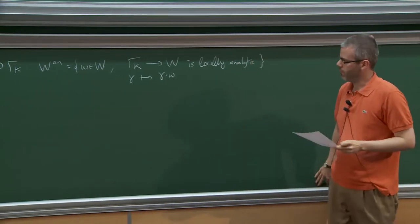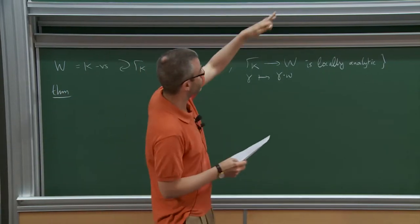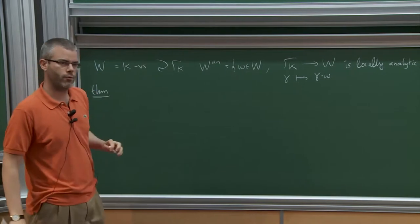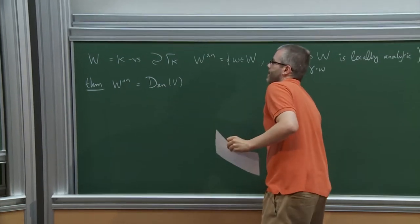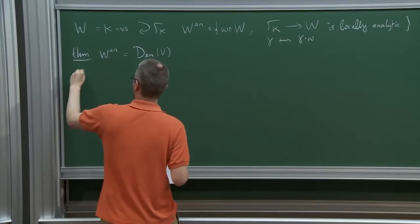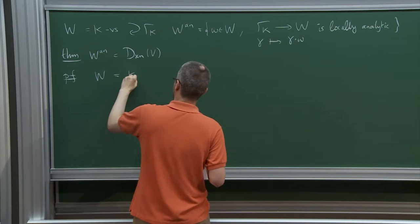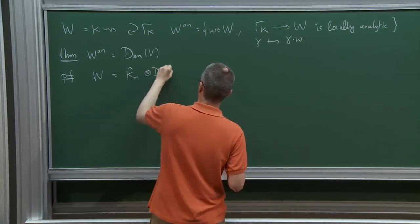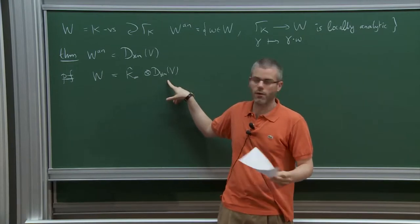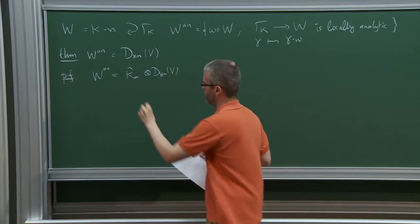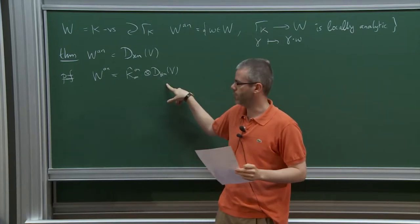W is a K_∞-vector space with a continuous action of Γ_K, and we set W^an to be the set of locally analytic vectors: the set of vectors of W such that the orbit map from Γ_K to W is locally analytic. This group has a locally analytic structure because it is an open subgroup of Z_p^×. This is a more natural definition if you're interested in doing differential algebra.